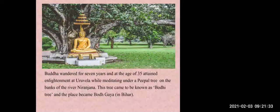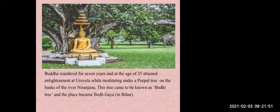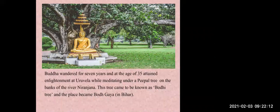Buddha wandered for seven years and at the age of 35 attained enlightenment while meditating under a Peepal tree on the banks of the river Niranjana. This tree came to be known as the Bodhi tree, and the place became Bodh Gaya. The place is called Uruvela, where Gautam Buddha is said to have attained enlightenment. Nowadays the Bodhi tree is at Gaya district in the Indian state of Bihar.